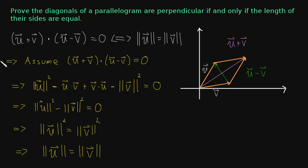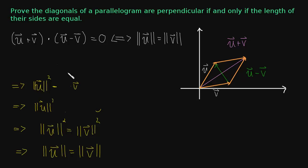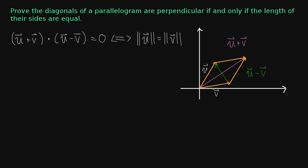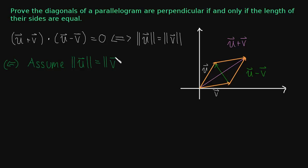Let's go ahead and prove that if the lengths are equal, then the vectors must be perpendicular. I'll write a backwards implication arrow to indicate we're doing the other part of the proof now. We're going to assume that the lengths are equal, and what we want to get to is that the diagonals are perpendicular. It seems like — well, where do we go from here? How do we construct a proof out of just this equality?